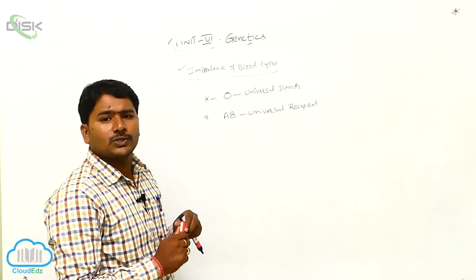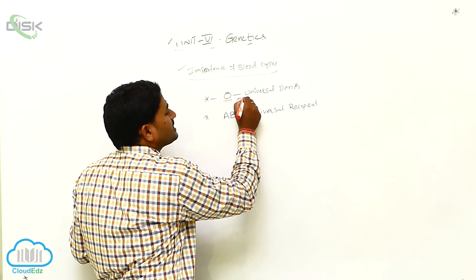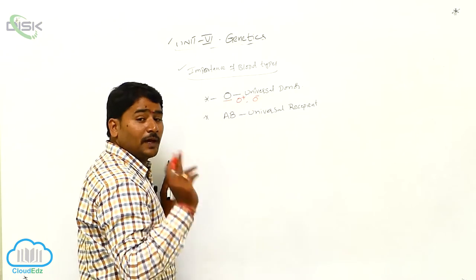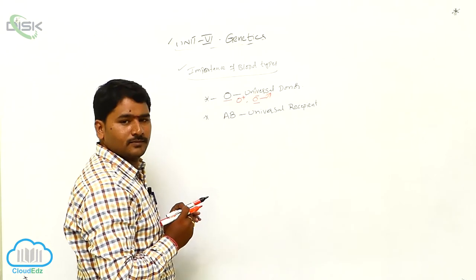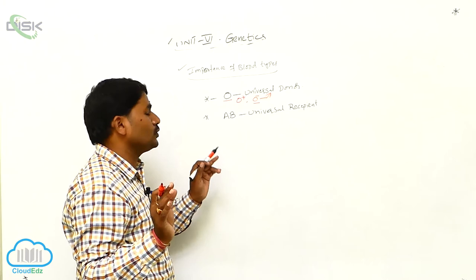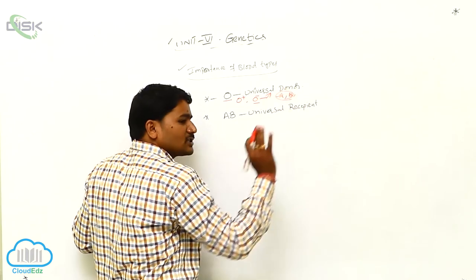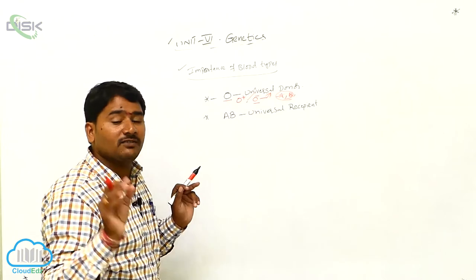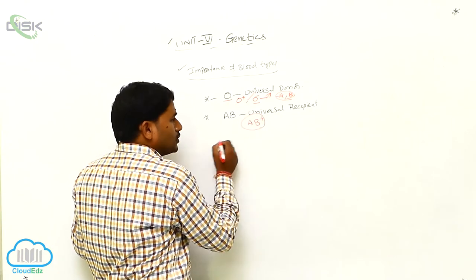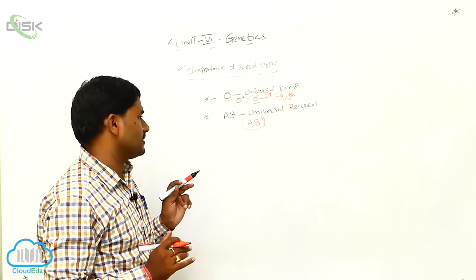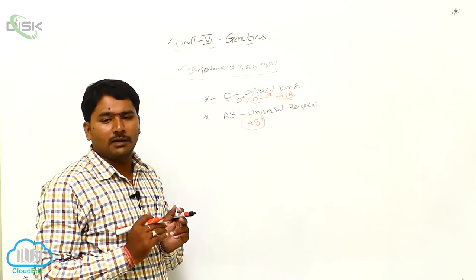O is actually of two types: O positive and O negative, based on the Rh antigen — we will discuss that later. O negative is the actual universal donor because no A antigen, no B antigen, and no Rh antigen are present. For universal recipient, it is AB positive, not AB negative. AB positive is the actual universal recipient and accepts any other blood group.